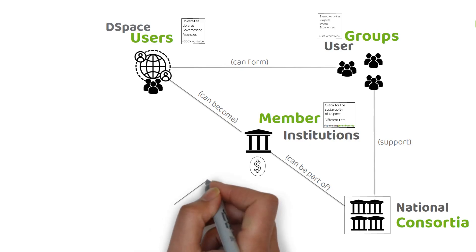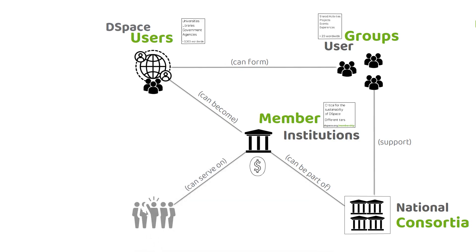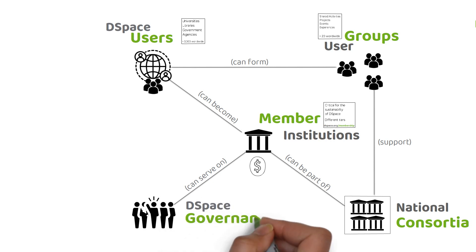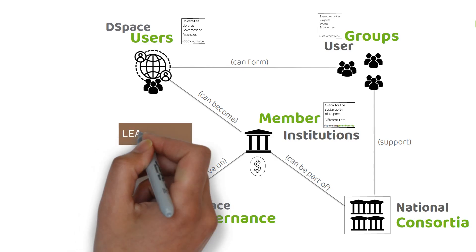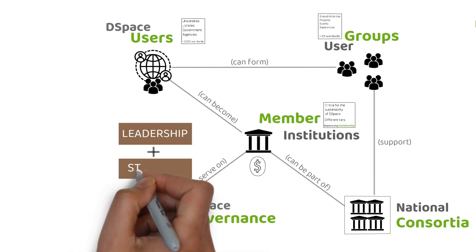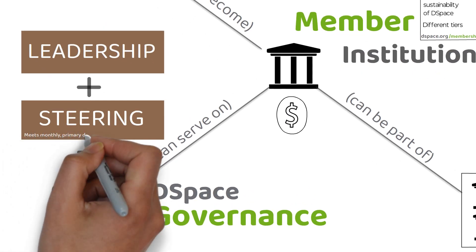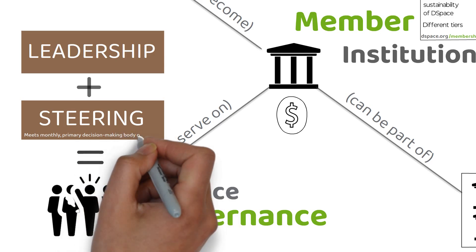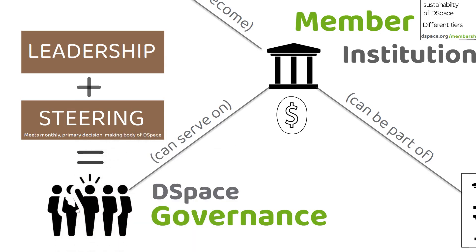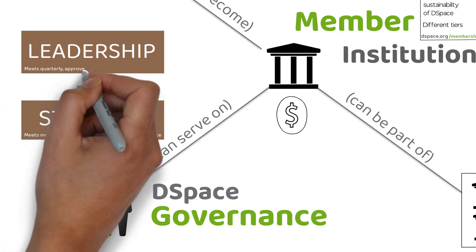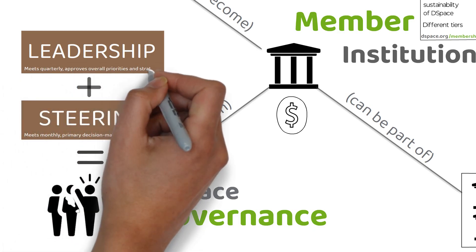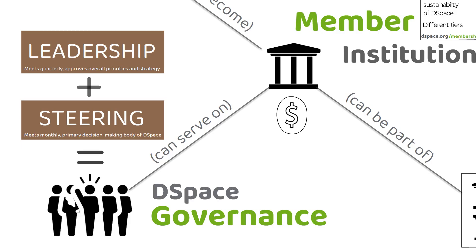One benefit of DSpace membership is the opportunity to serve on governance. DSpace governance sets the strategic direction for the DSpace software and consists of the leadership group and the steering group. The steering group meets monthly and is more involved in the day-to-day operations of the DSpace program and makes recommendations to the leadership group. The leadership group, which meets quarterly, approves the overall priorities and strategic direction of the DSpace program.